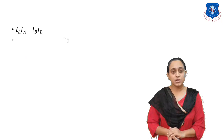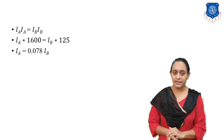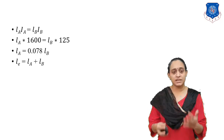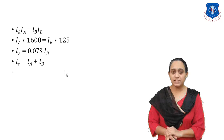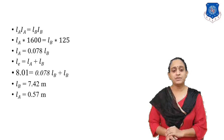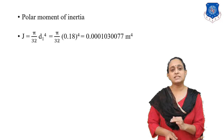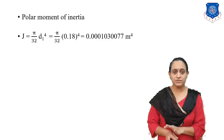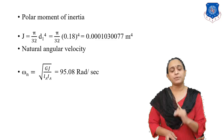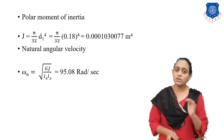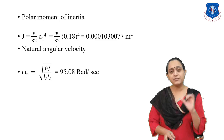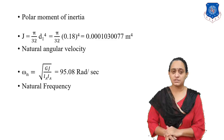Using the equation L_A I_A equals L_B I_B, we get L_A equals 0.078 L_B. Since L_A plus L_B equals the equivalent length, we get L_B equals 7.42 m and L_A equals 0.57 m. The polar moment of inertia J equals pi by 32 times D1 raised to 4. By putting the value of D1 we get J. Natural angular velocity omega_N equals under root of (GJ by L_A I_A), and by putting all values of G, J, L_A, and I_A we get omega_N as 95.08 radians per second.